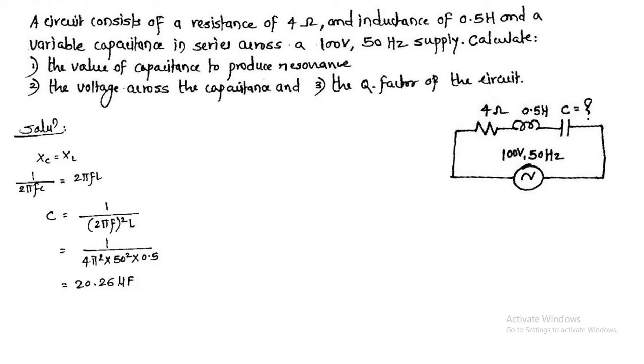Now the second parameter is voltage across the capacitance. Voltage across the capacitance means which voltage drop? VC, which I want to find out, is I into XC. And as I know C, I can find out XC, that is 1 upon 2πFC. Then I can multiply it to the current and I will get the value of VC.